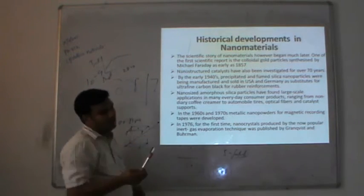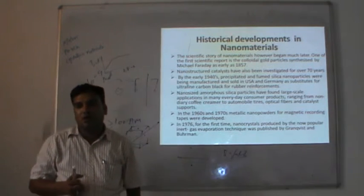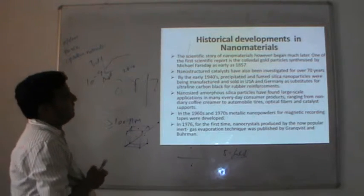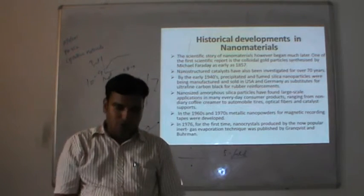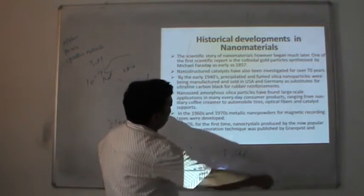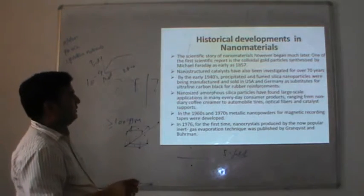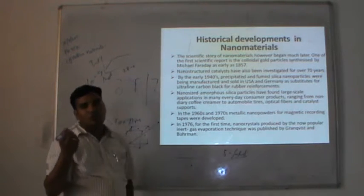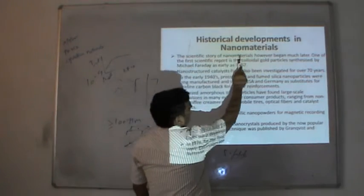One of the first scientific reports on nanomaterials is the colloidal gold particles synthesized by Michael Faraday, already sitting in the archives from 1857. Everybody knows about Faraday's contributions in the field of electrochemistry — he used colloidal gold particles in electrodes. The interesting fact, known after 1970, is that the gold particles used in those electrodes were in the range of nanometres.